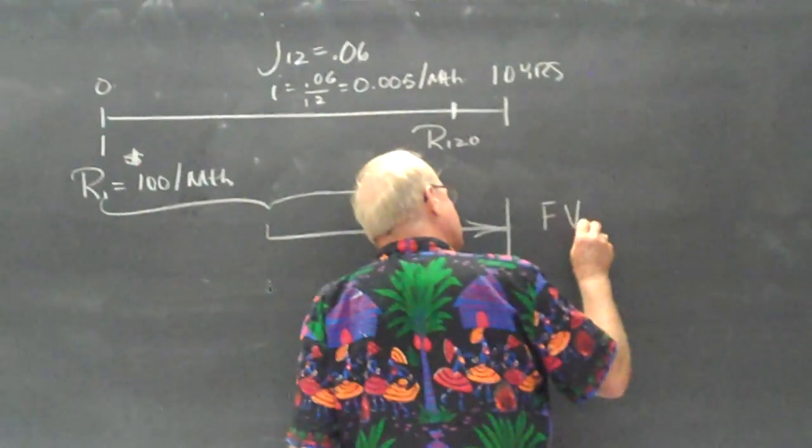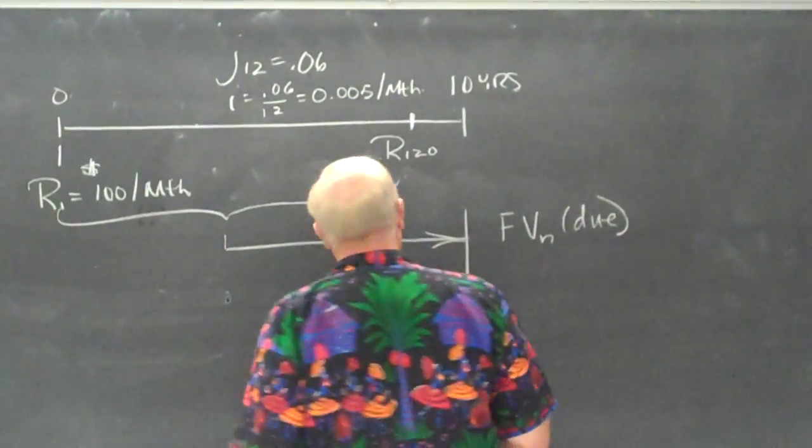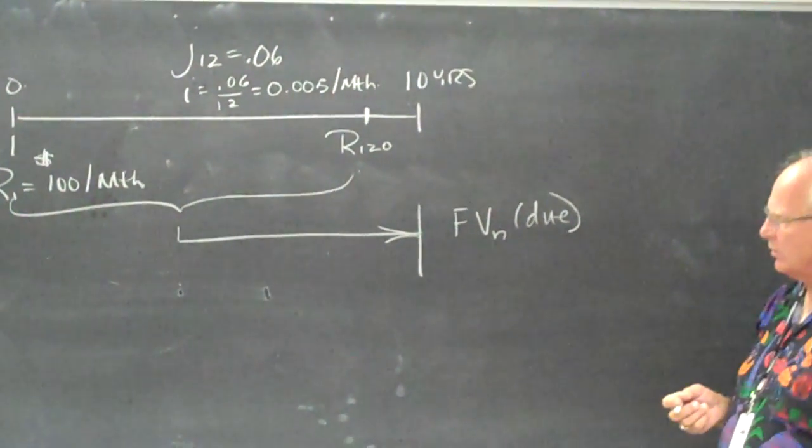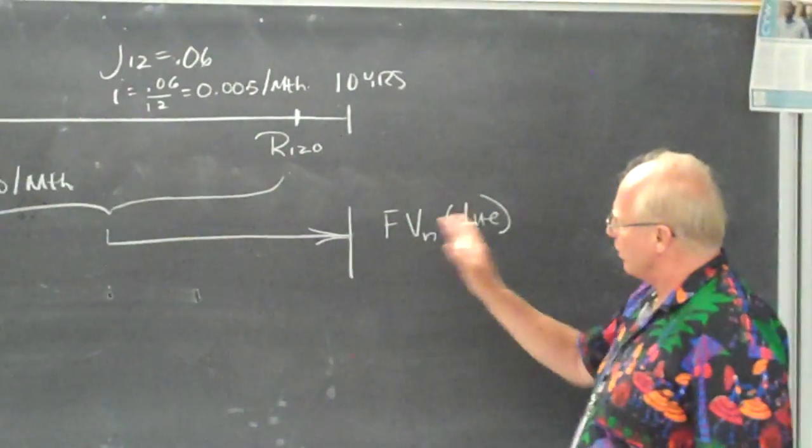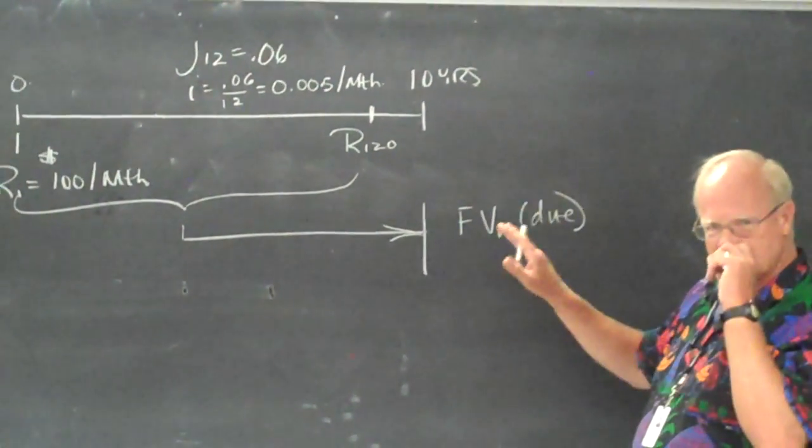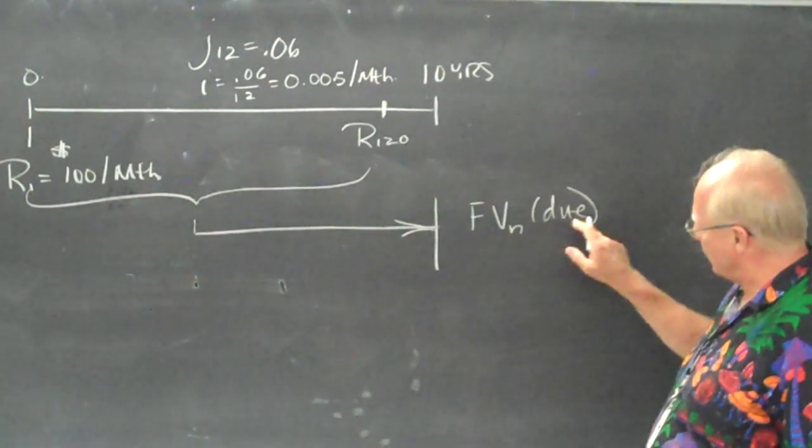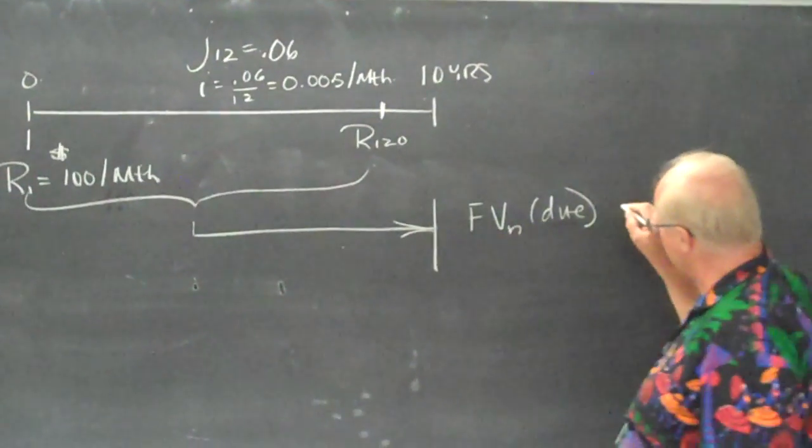This is an annuity due because they are starting to make the payments or deposits into an account today, at the beginning of the interval. It's the same as the future value formula for an ordinary annuity, just we have the 1 plus i stuck on at the end.